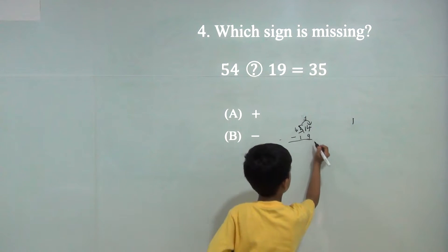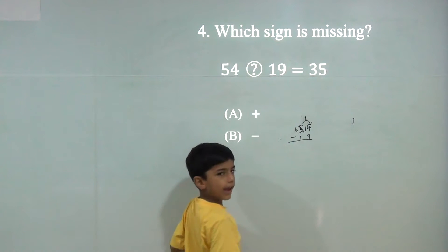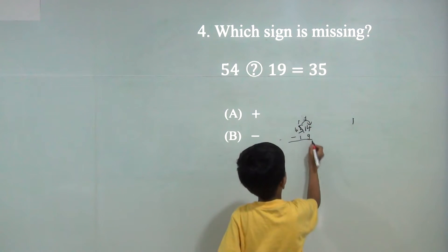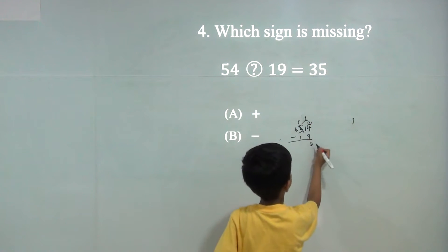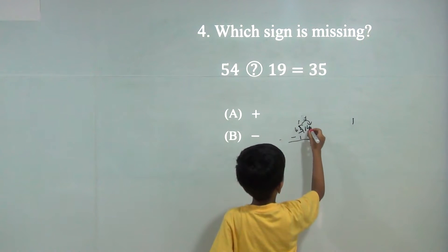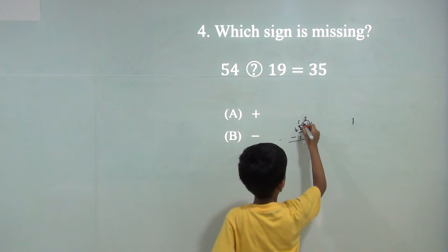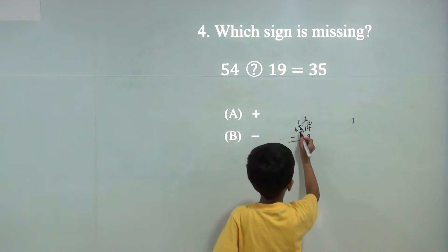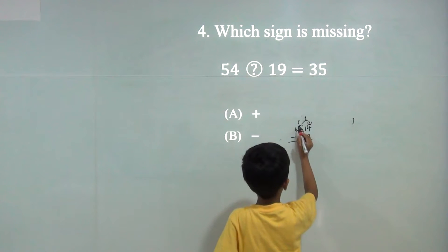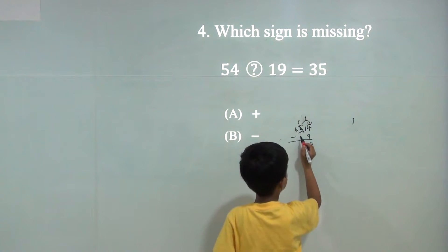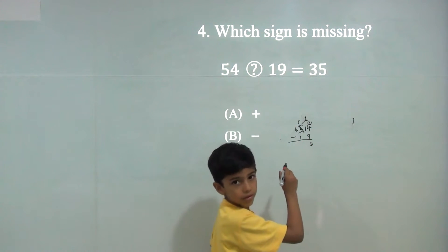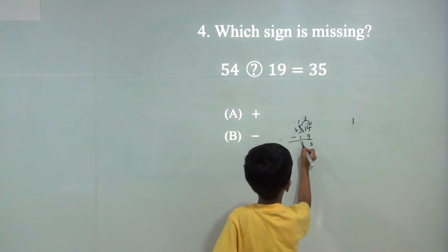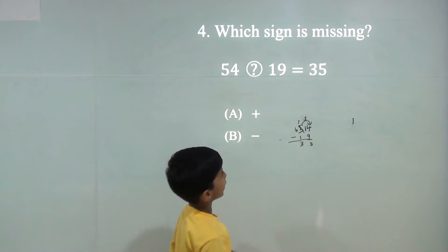14 minus 9 is 5. 4 minus 1 is 3. So the answer would be 35.